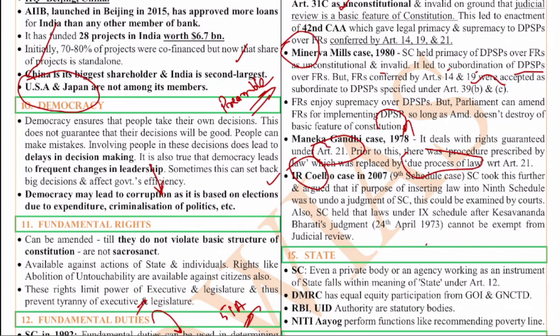In the IR Coelho case of 2007, the Supreme Court discussed the ninth schedule. Though the ninth schedule was initially introduced to overcome judicial scrutiny, since judicial scrutiny is part of the basic structure, the ninth schedule does not have importance in today's scenario. Before 1973, any law placed in the ninth schedule could not be examined. But any law placed in the ninth schedule after 24th April 1973 will be examined by the court.